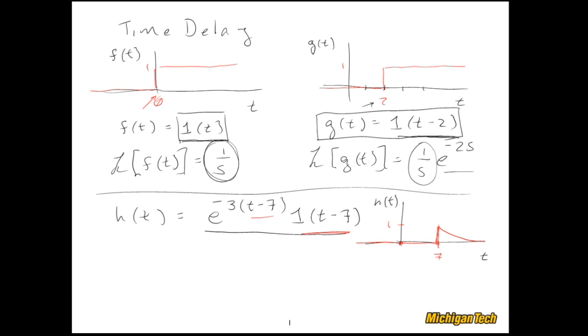Now when you see a function like this where every occurrence of time is actually grouped with t minus some constant, it's clearly a time delayed function. And we can see that here, and so the undelayed version of this would be e^(-3t).